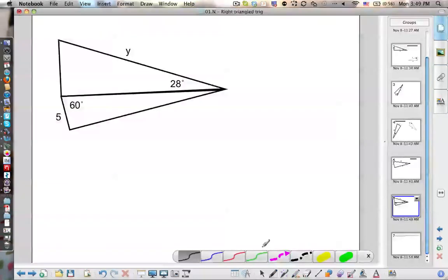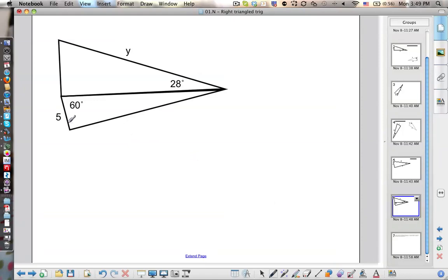Here's a problem on trigonometry that involves a couple of right triangles. I forgot to put in the right angles here. So here's our right angles.